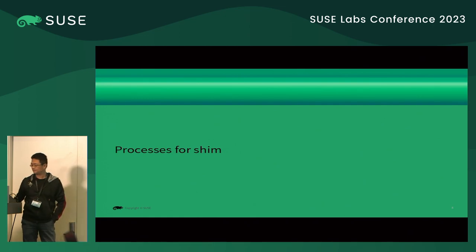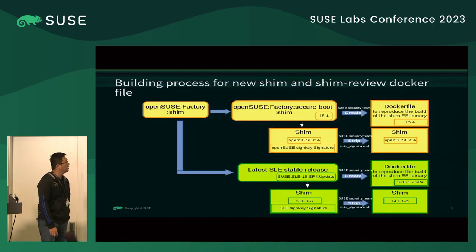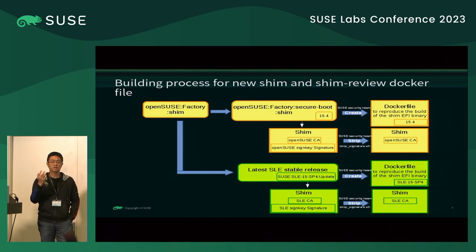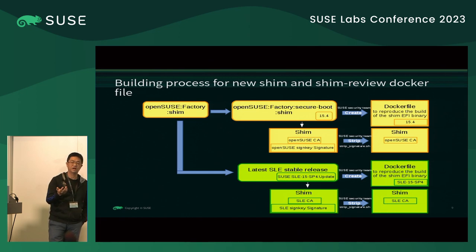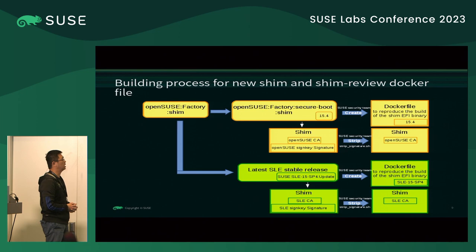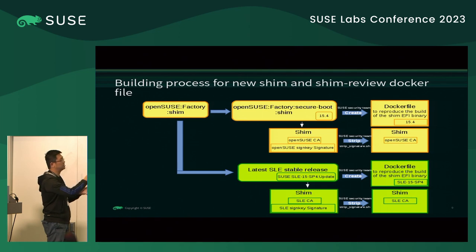Now, the process of SHIM. The slides will be shared after the talk. This is the build process for a new SHIM and the SHIM review Dockerfile. We need to provide a Dockerfile so anyone who wants to review our SHIM can use it to reproduce the build of our SHIM binary. This is a requirement requested by the SHIM review project. We build our SHIM — the yellow color means it is on OBS, and the green color is on IBS.